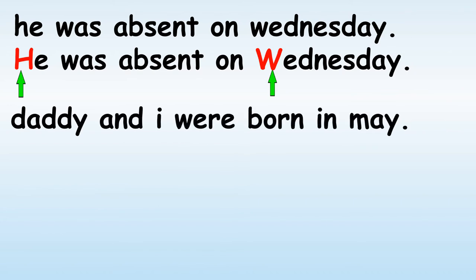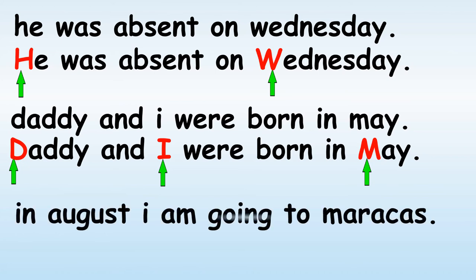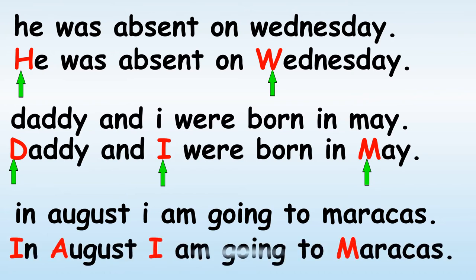Daddy and I were born in May. Daddy begins the sentence, then we have I, and May which is a month of the year. In August I am going to Maracas. We have capital I for 'in,' capital A for August because it is a special name given to a month of the year. Remember when we are writing I. And Maracas is a special name given to a place.